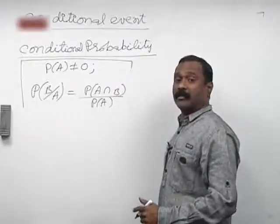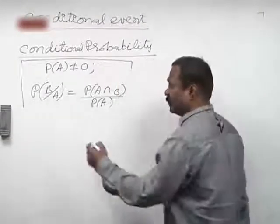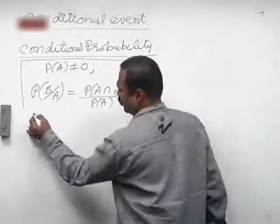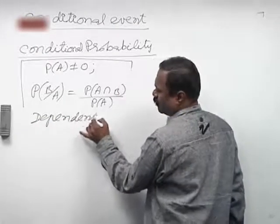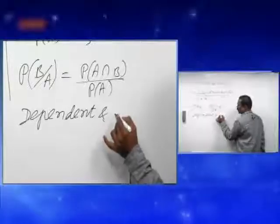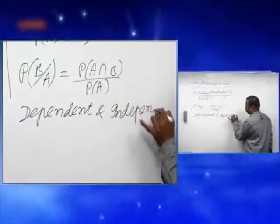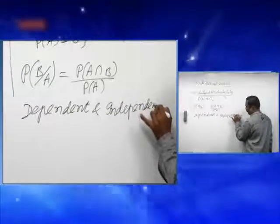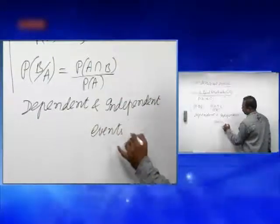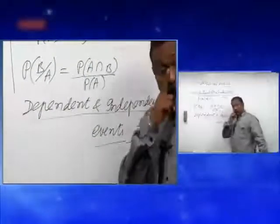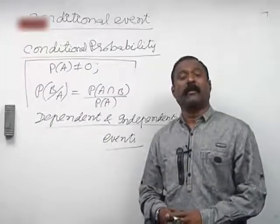Conditional probability can be extended to the multiplication theorem. But before going to the multiplication theorem, let me explain what dependent and independent events are. What are the dependent events and what are the independent events?